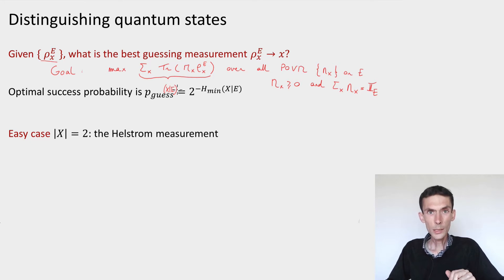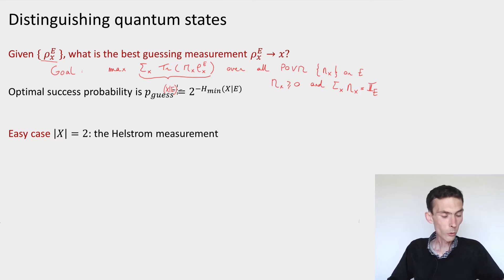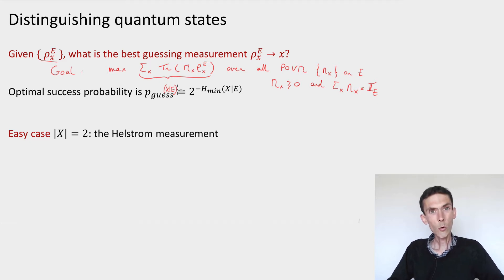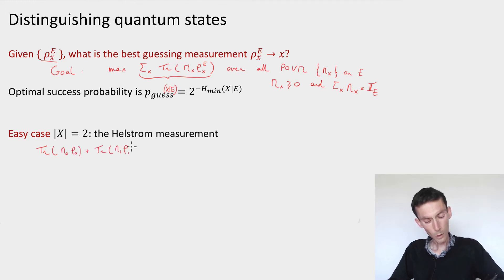There is one easy case, which is the case where the number of possible x is 2. In that case we can solve everything. So we have two states, rho_0 and rho_1, and we're trying to maximize the trace of m_0 rho_0 plus the trace of m_1 rho_1.